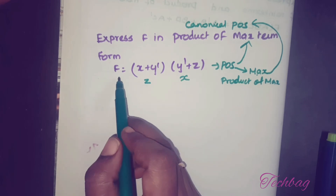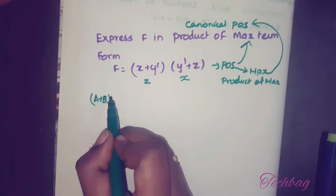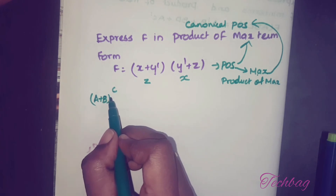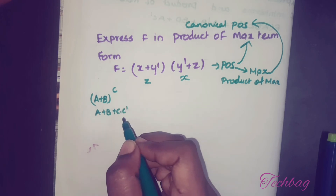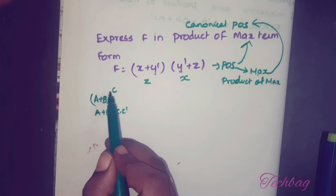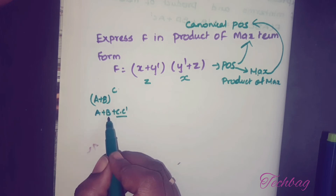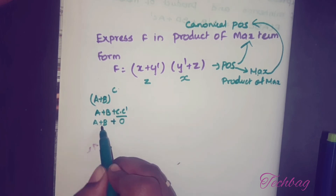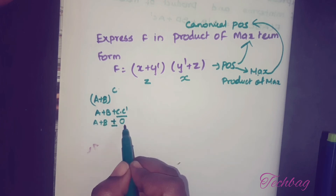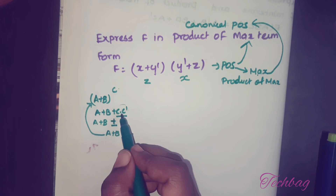How to include that missing variable without changing the functionality of f? Let's take an example: a plus b. If c is missing in this sum term, you have to include c by adding c·c' with this. So a plus b becomes a plus b plus c·c'. By adding c·c', it will not change the functionality because c·c' is always 0, and in OR operation any element OR'd with 0 gives the same element, so you still get a plus b.